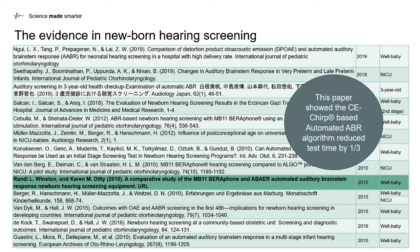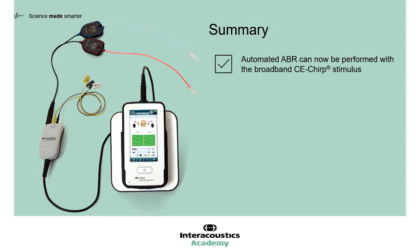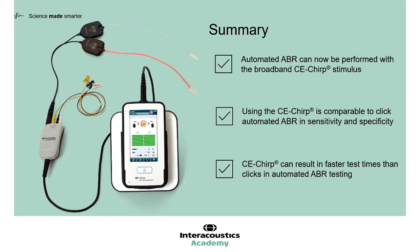Therefore, we can see that the benefits of the CE CHIRP which have been shown in diagnostic ABR can be translated into the world of newborn hearing screening. In summary, automated ABRs can now be performed with the broadband CE CHIRP stimulus. By using the CE CHIRP stimulus, it is comparable to the click automated ABR in both sensitivity and specificity. Lastly, by testing using the CE CHIRP, it can result in faster test times than traditional clicks in automated ABR testing.